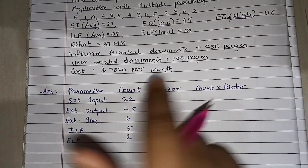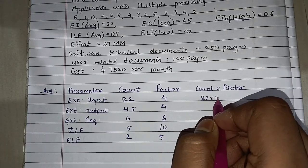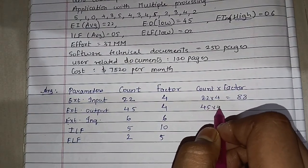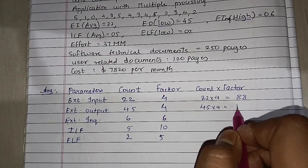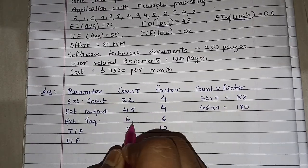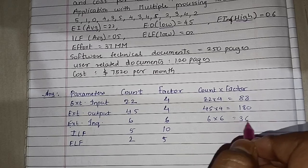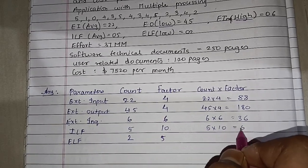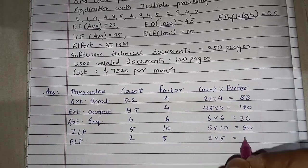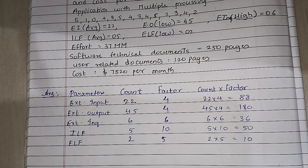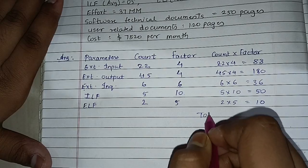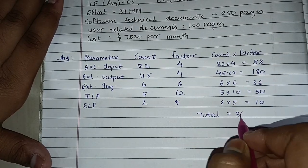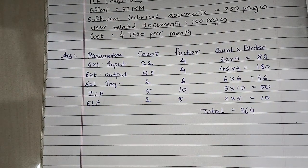Now computing count × factor: 22 × 4 = 88, 45 × 4 = 180, 6 × 6 = 36, 5 × 10 = 50, 2 × 5 = 10. The total — the summation of all these — is 364. This total is the count total, also called the unadjusted function point (UFP).